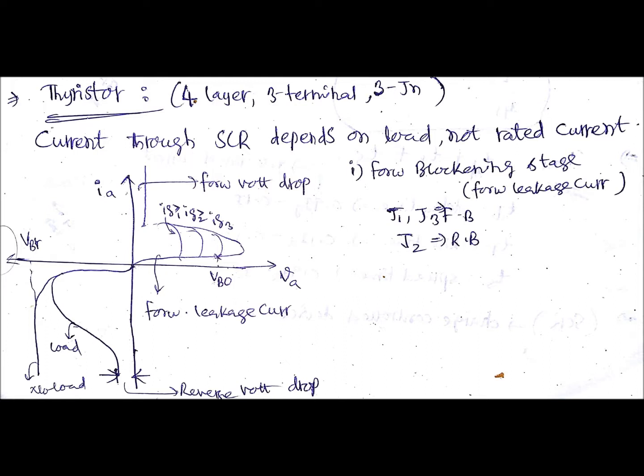There are basically various stages for an SCR: turn on, turn off, or before turn on it is the forward blockening stage. As I said, there are three junctions J1, J2, and J3. Initially during forward blockening stage where there is forward leakage current, the junctions J1 and J3 are forward biased and J2 is reverse biased.